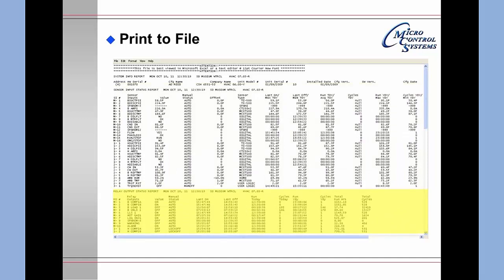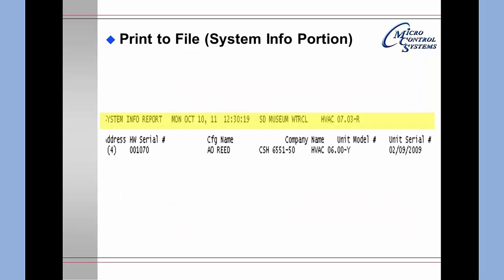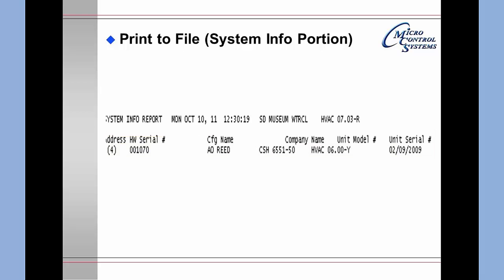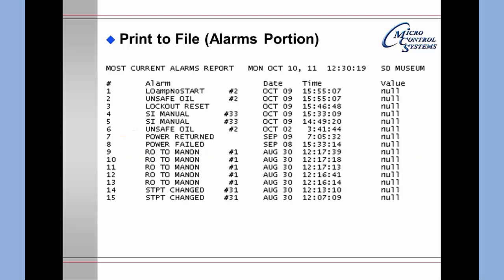The following pages show control status, set points, alarms, etc. This is an expansion of the header portion, which shows that this data was pulled on Monday, October 10th, 2011 at 12:30 in the afternoon. It is from the San Diego Museum and we're currently running HVAC 0703R. There are 100 alarms stored in the Magnum and I have printed out just the first 15 so they are large enough to see on the screen.